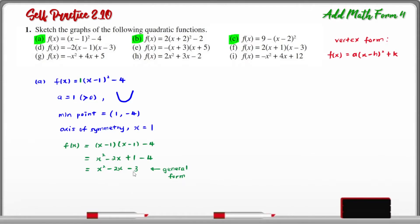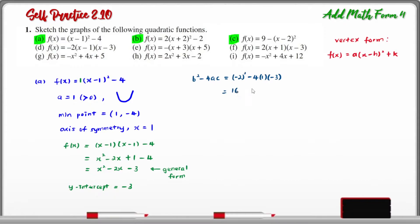From the general form, the constant C is -3, which is the y-intercept. Next, we determine the type of roots using the discriminant: b² - 4ac. Here, b = -2, a = 1, and c = -3, so the discriminant equals (-2)² - 4(1)(-3) = 16, which is greater than 0. Therefore, this quadratic function has two different real roots.